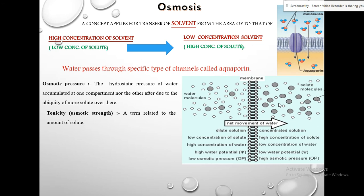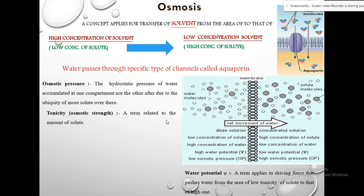There is another term called tonicity, or osmotic strength — it is a term related to the amount of solute. A solution of high tonicity means it has a high amount of solute, while a solution of low tonicity has a low amount of solute. Another term is water potential, represented by the symbol psi (Ψ). It applies to the driving force that pushes water from one area to another. Water always transmits from the area of low osmotic pressure to the area of high osmotic pressure.